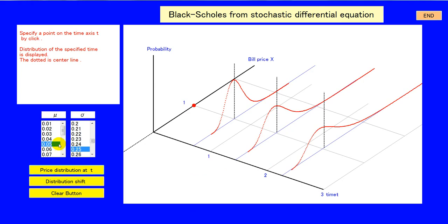Set the boundary condition and appoint a time at will by clicking time axis. Then the distribution is shown immediately. A long tail is observed on the side of X greater than the average.